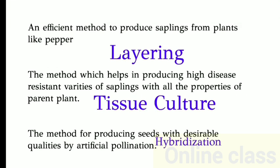An efficient method to produce saplings from plants like pepper is layering. The method which helps in producing high disease-resistant varieties of saplings with all properties of the parent plant is tissue culture. The method for producing seeds with desirable qualities by artificial pollination is hybridization.